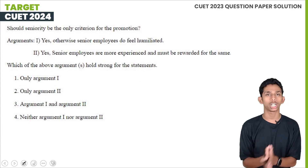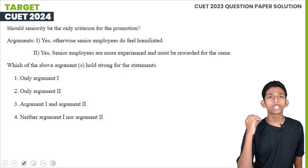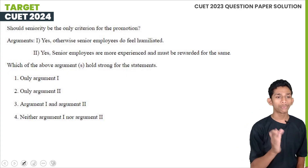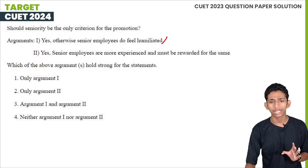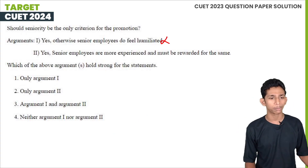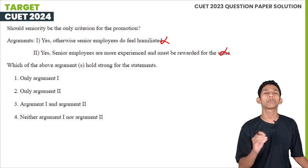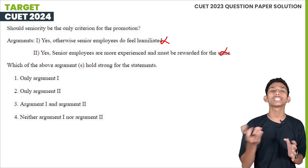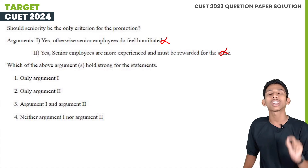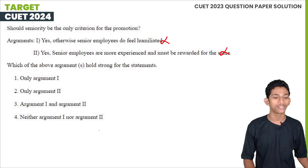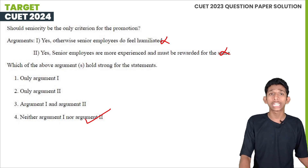We will talk about a statement and argument question. Should seniority be the only criterion for promotion? The first argument is yes — otherwise senior employees feel humiliated. The second argument is yes — senior employees are more experienced and should be rewarded. If we have a senior, you could have a criterion for promotion. That means neither argument 1 nor argument 2 is strong. Option 4: neither argument 1 nor argument 2.